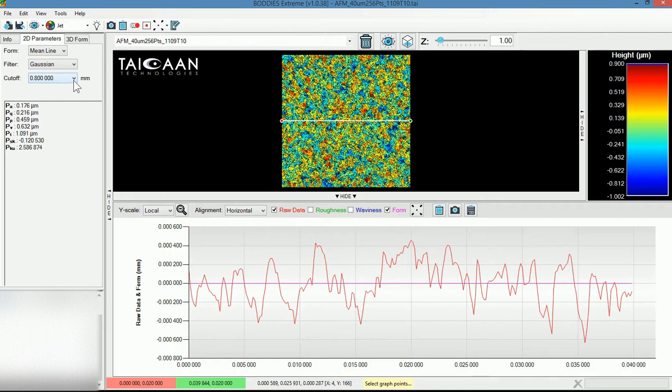If I click the arrow here pointing downwards, here we have some standard ISO values for the cutoff for the Gaussian filter. You're going to see the effect of this and the effect it has on the data.